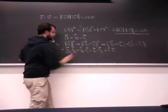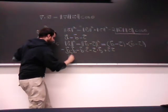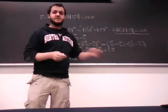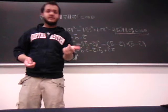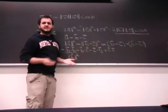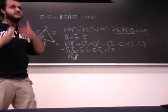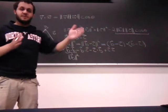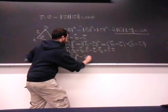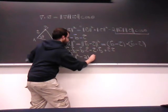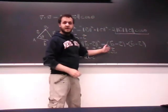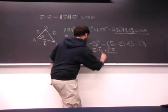By the same logic, b dotted with b is the magnitude of b squared. And since the dot product is commutative — meaning you can flip the order of the vectors and get the same result — b dotted with c equals c dotted with b. So those two middle terms combine to give minus twice the dot product of b and c. And c dotted with itself is the magnitude of c squared.